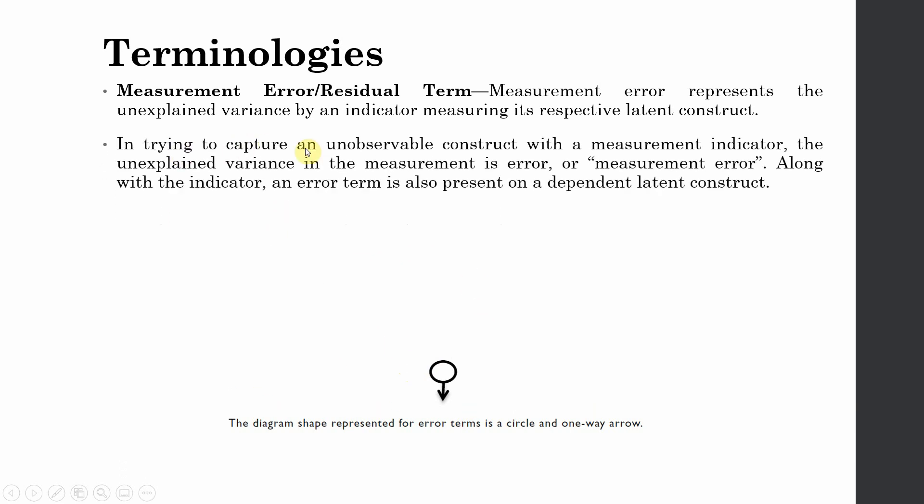In order to capture the unobservable construct with a measurement indicator, the unexplained variance in the measurement is the error or measurement error—something that is not explained.